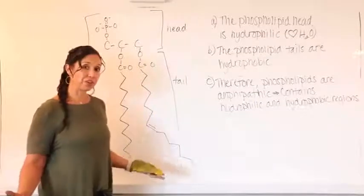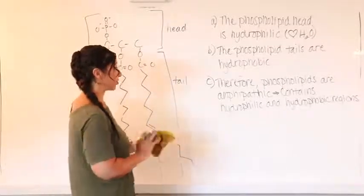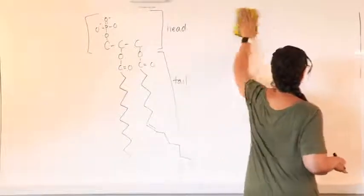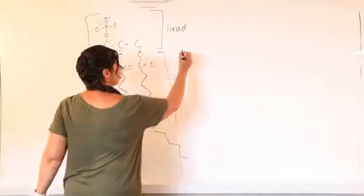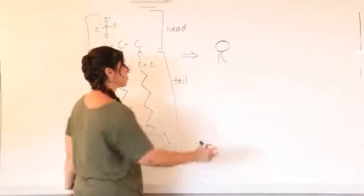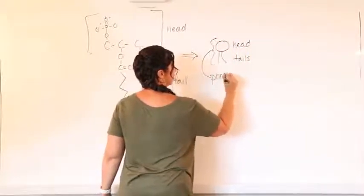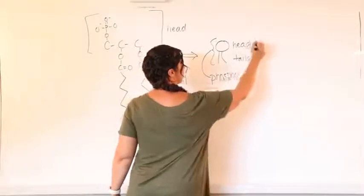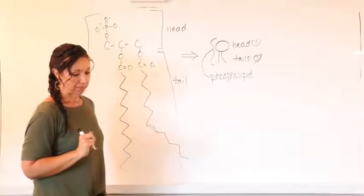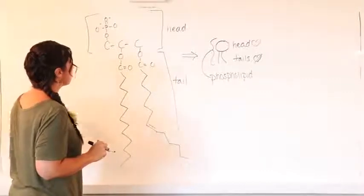I'm going to show you the shorthand version of what a phospholipid looks like in the biology world, because drawing something like this takes a lot of time. The shorthand version is: you make a head and two tails — it's actually kind of cute. So you've got your head and your tails, and that is a phospholipid. If the head loves water, the tails do not love water.